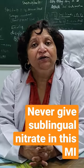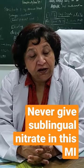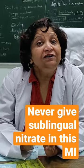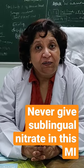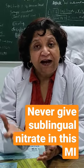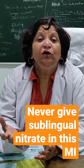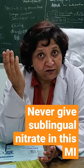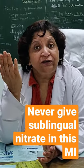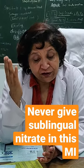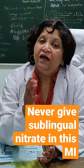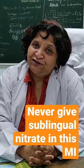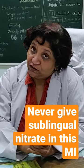Then you should never give sublingual sorbitrate for the chest pain, because the right ventricle is preload dependent. Sorbitrate or nitroglycerin will reduce the preload, the BP will crash down, and the patient will crash down.